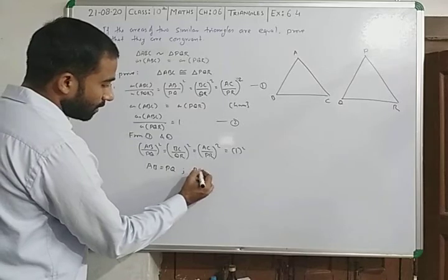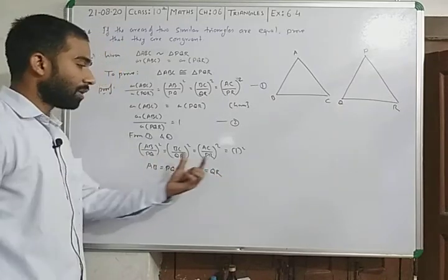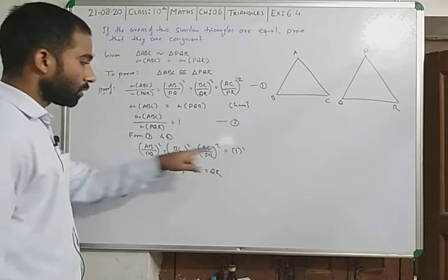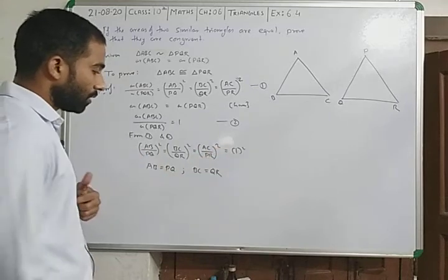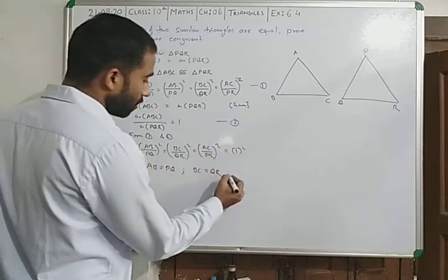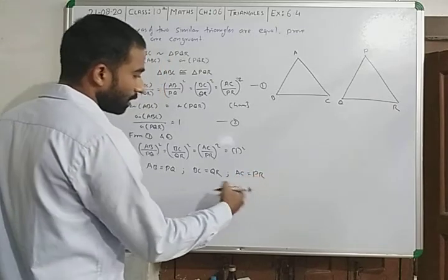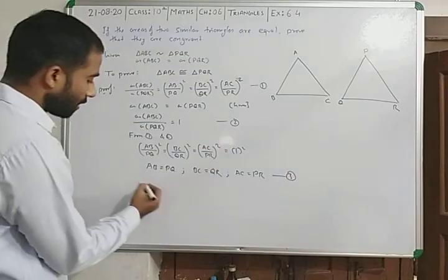Similarly BC is equal to QR. If we separately equate all values to 1, square cancels square, PQ goes there so AB equals PQ, BC equals QR, and AC equals PR. So we have found these.